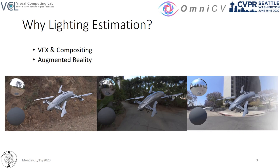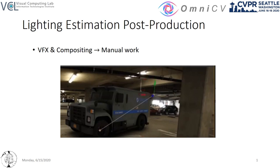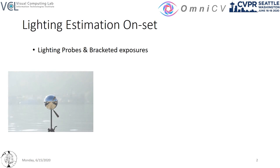For visual effects, lighting is a laborious task as it is often added manually, which is a tedious process that includes setting its position, direction, and other properties like emission strength and color. On-set productions usually address this by using light probes or fusing bracketed exposure images to create high dynamic range captures.